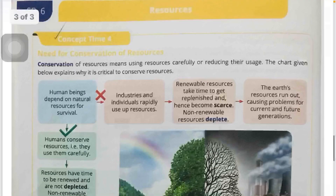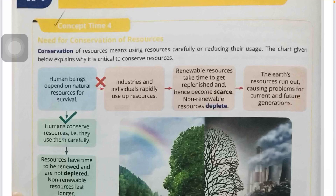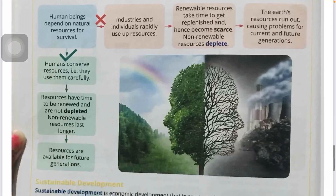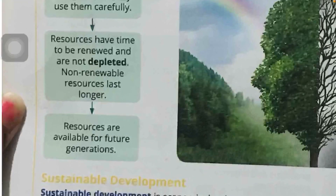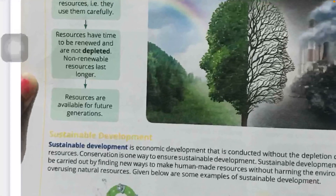Next is the need for conservation of resources. Conservation means we must use our resources carefully. If human beings use too many resources for their survival, and industries also overuse them, resources will be lost and the next generation will not have them. Therefore, humans must preserve resources and use them carefully so that they will be available for future generations.